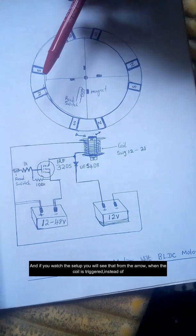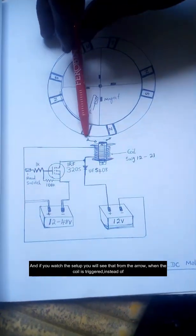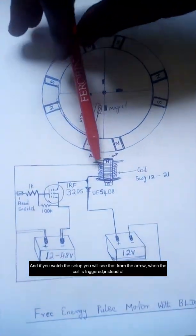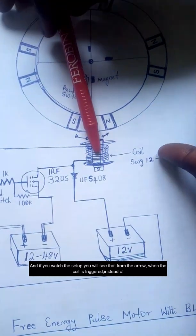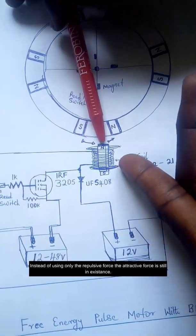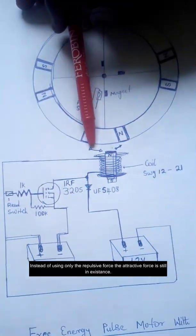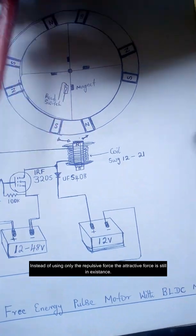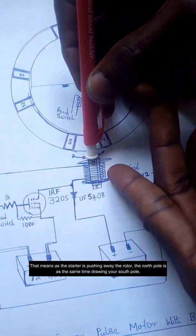Instead of using only the repulsive force, the attractive force is still in existence. That means as the starter is pushing away the rotor, the north pole is at the same time drawing the south pole.